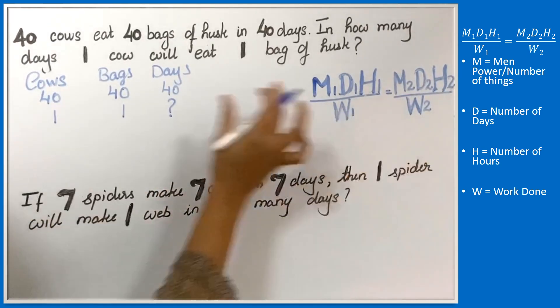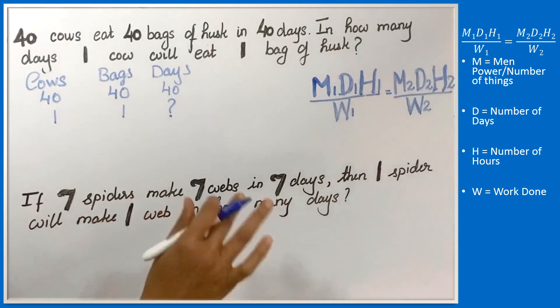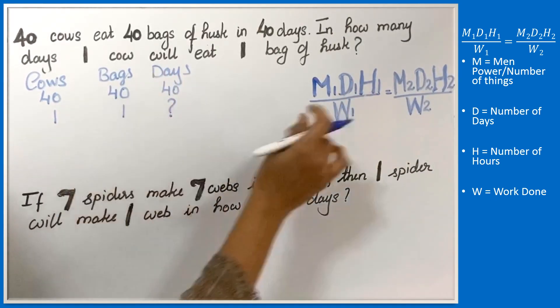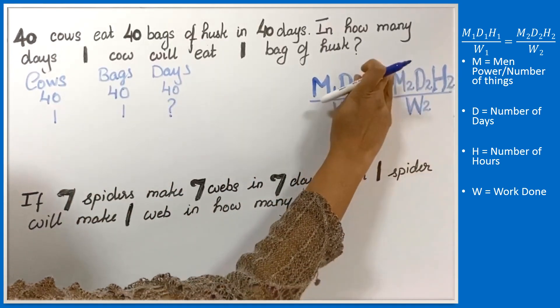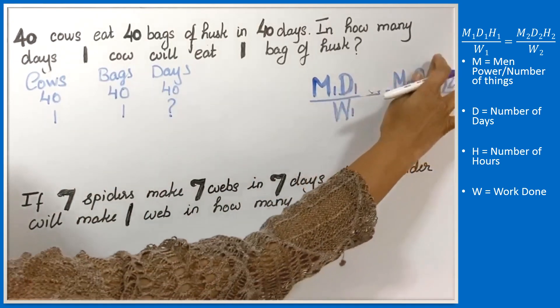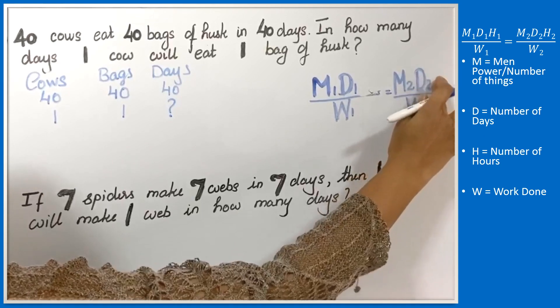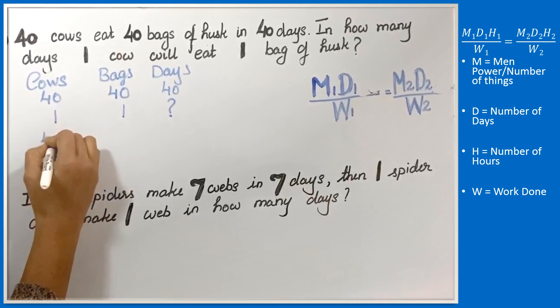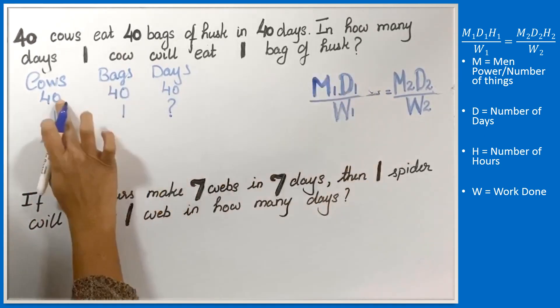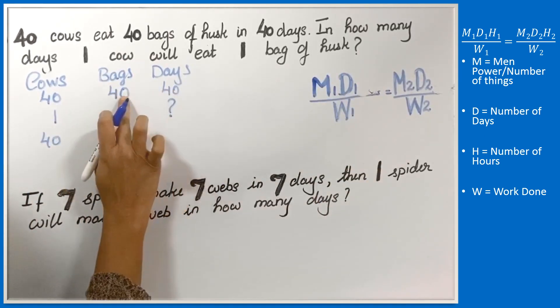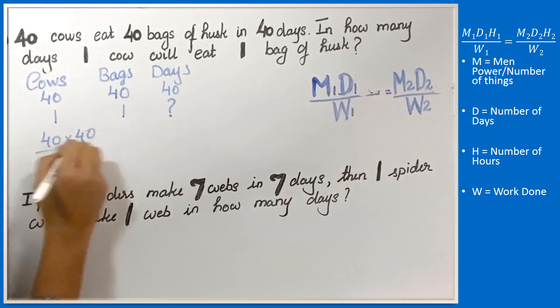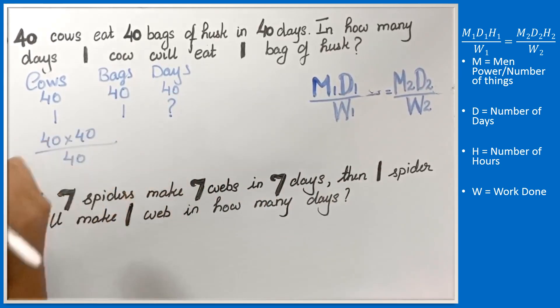Let's substitute in this given one. What is H? It is hours. It's not listed in this question, so let's delete this. Now M1 is the number of cows 40, D1 is 40, and W1 is 40. Work done.